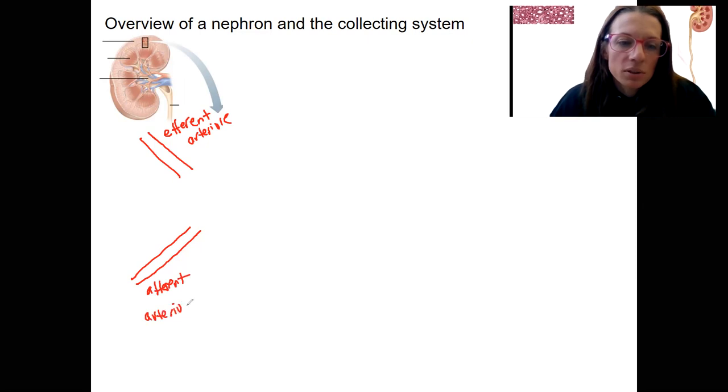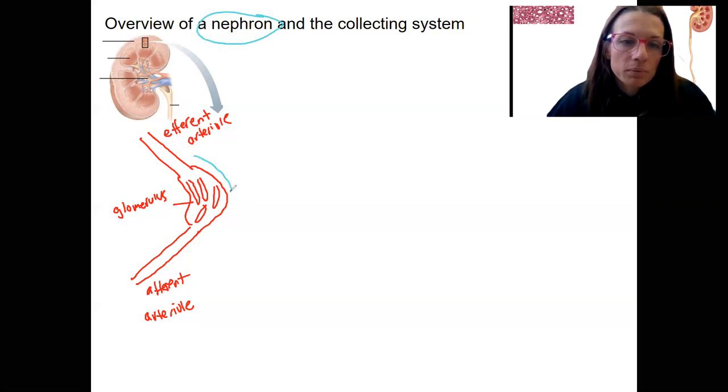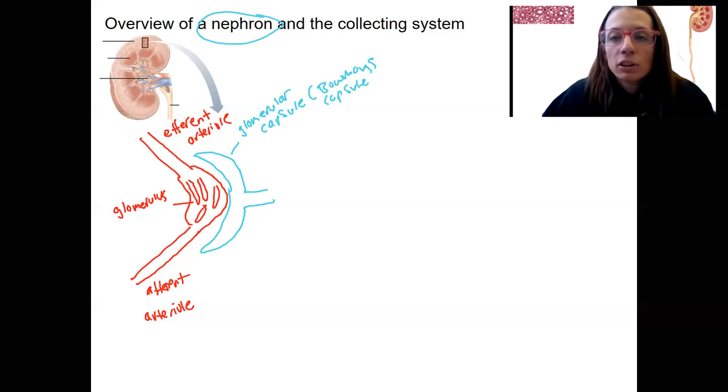In between these two arterioles is what's called a glomerulus. It is a highly fenestrated capillary bed where filtration occurs. We will look at it more closely later. So surrounding that glomerulus is going to be the first section of our nephron. I'm going to draw the nephron in blue. This that I'm drawing right here is our glomerular capsule, also called Bowman's capsule. And this whole structure together is called a renal corpuscle.